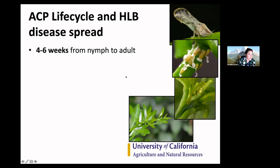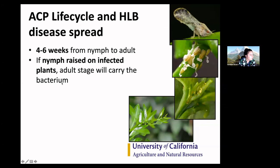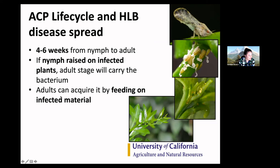It takes about four to six weeks for nymphs to develop into adults. The nymphs are weird looking — they have little red eyes and can be more brown or more yellow. Here are the eggs and really early stage nymphs on early stage flush. If these nymphs are raised on infected material, it's almost certain that the adult stage will carry the bacterium, because the bacterium has actually colonized their stomach. As they molt through to become adults, they're still going to have that bacterium in their gut cells — it actually does damage to the gut.